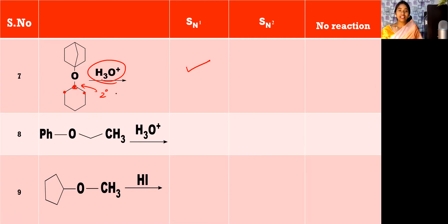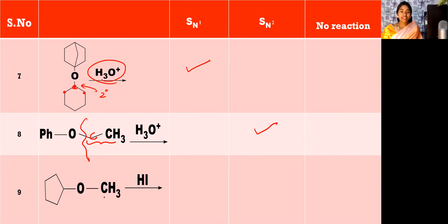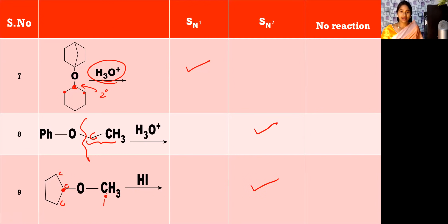And coming to the next part, see a benzene ring on this side and this is a primary alkyl halide. Whenever a primary alkyl halide is present, mark it as SN2 reaction. And see the next one — this side primary, other side a cyclohexane ring with a secondary carbon. It involves SN2 reaction.